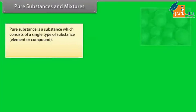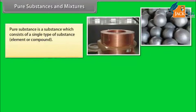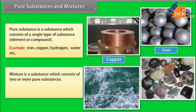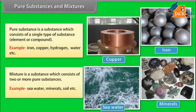A pure substance is a substance which consists of a single type of substance — element or compound. Examples include iron, copper, hydrogen, and water. A mixture is a substance which consists of two or more pure substances; for example, seawater, minerals, and soil.